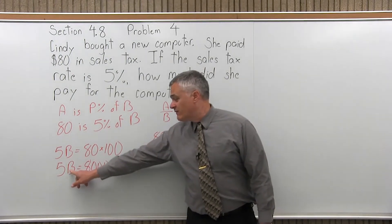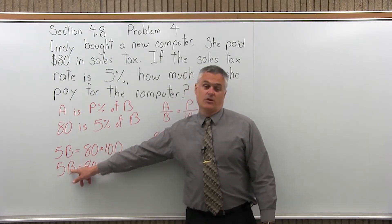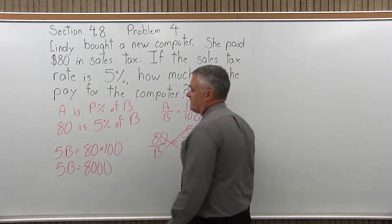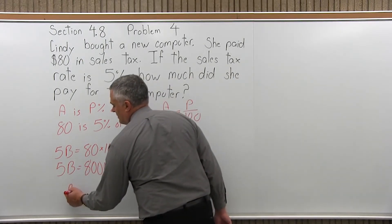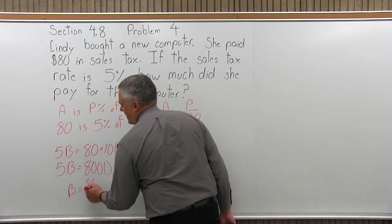So now that's not the answer. That's what 5B is equal to. I want to know what B is. So to find B, you divide out the 5. So B is 8,000 over 5.